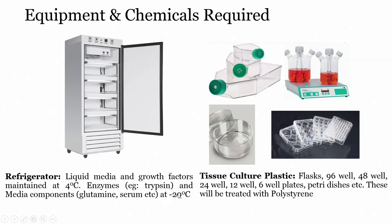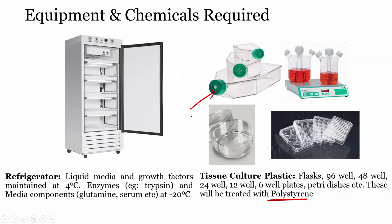Tissue culture plastics include flasks and well plates: 96-well plate, 48-well plate, 24-well plate, 12-well plate, and 6-well plate, as well as Petri dishes. These are treated with polystyrene. There are also T75 flasks and T25 flasks — these are the flasks for handling and growing your cells in a controlled environment.